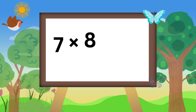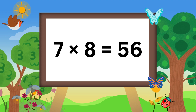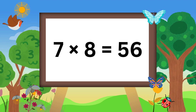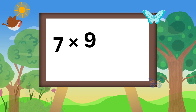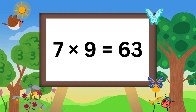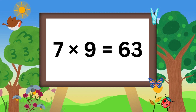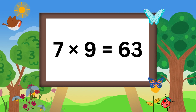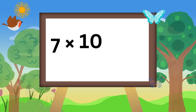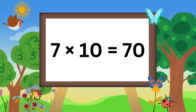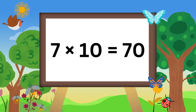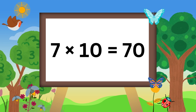...forty-nine. Seven eights are fifty-six. Seven nines are sixty-three. Seven tens are seventy.